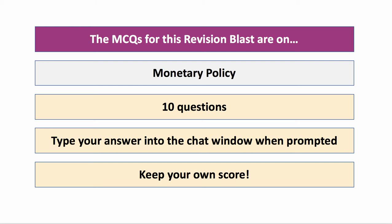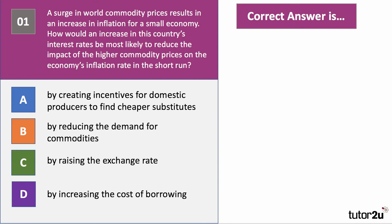Here we go — ten revision blast questions on monetary policy. Question one: a surge in world commodity prices causes an increase in inflation for a small country. How would an increase in this country's interest rates be most likely to reduce the impact of higher commodity prices on the inflation rate in the short run? Press pause, have a think, and come back for the answer.